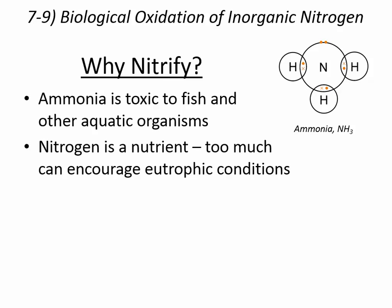We have to remove and control how much nitrogen gets into the environment. If water is going to be reused for irrigation, or in places like Singapore where treated wastewater goes through the 'new water' system all the way to a bottle, nitrogen must be removed. Nitrate has an MCL (maximum contaminant level) of 10 mg/L for drinking water, while wastewater typically has 25 to 45 mg/L — sometimes as high as 200 mg/L. You have to remove a lot of nitrogen to make water acceptable for the environment or for drinking.